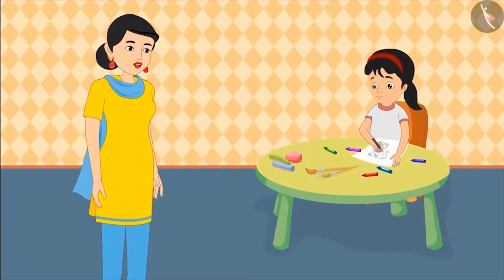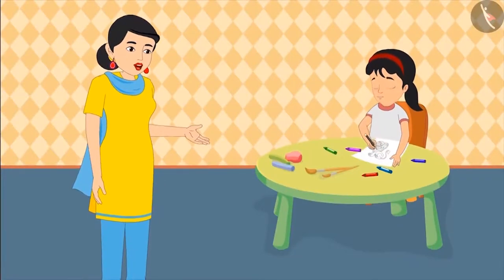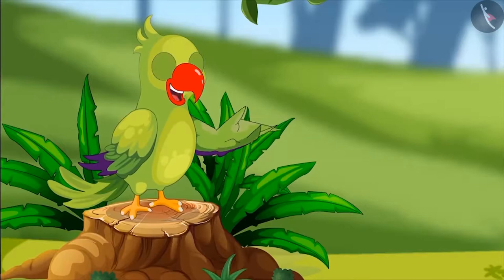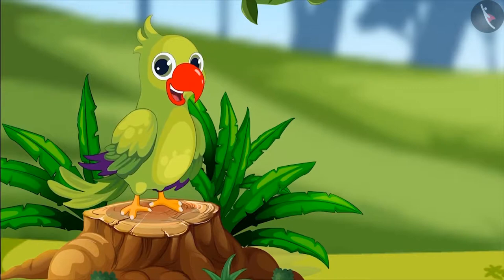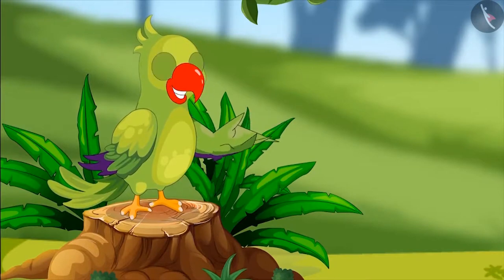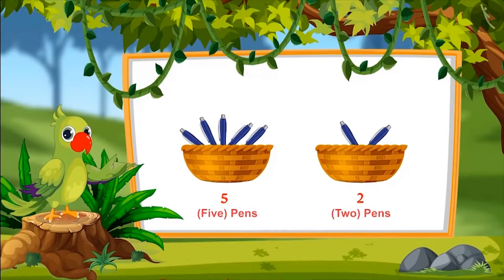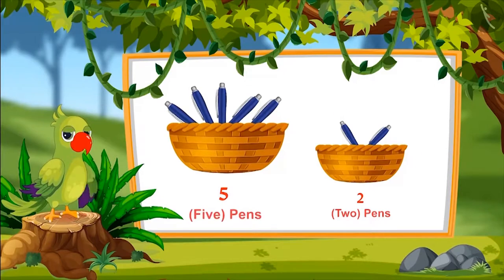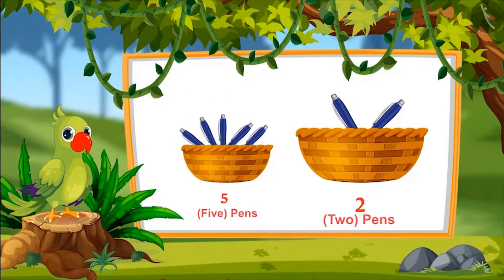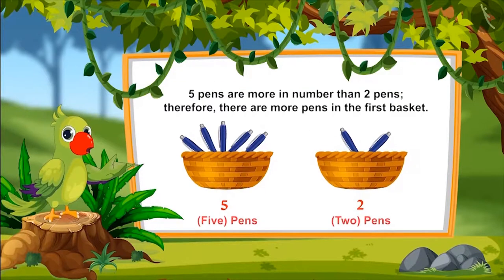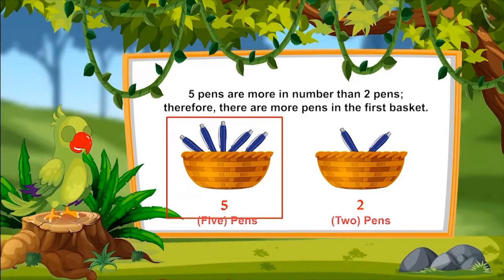Mom praises Pinky again and tells her to wash her hands and come eat. The narrator reminds children that in this example they saw how Pinky compared the number of different animals, and asks them to try comparing things near them. For example: which basket has more pens — the first basket containing five pens or the second containing two? Five pens are more than two, so the first basket has more pens.